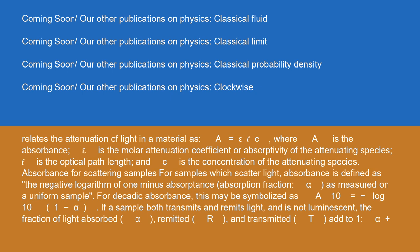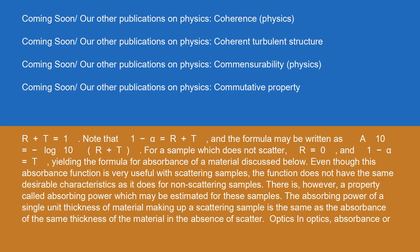For scattering samples, absorbance is defined as the negative logarithm of 1 minus absorptance (absorption fraction, α), as measured on a uniform sample. For decadic absorbance, this may be symbolized as A₁₀ = −log₁₀(1 − α). If a sample both transmits and remits light and is not luminescent, the fraction of light absorbed α, remitted R, and transmitted T add to 1: α + R + T = 1. Note that 1 − α = R + T, so the formula may be written as A₁₀ = −log₁₀(R + T). For a sample which does not scatter, R = 0 and 1 − α = T, yielding the standard formula for absorbance.